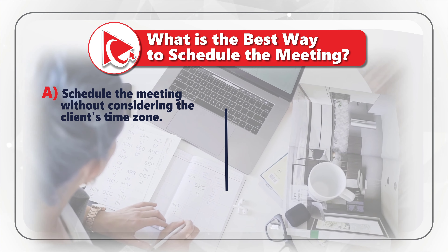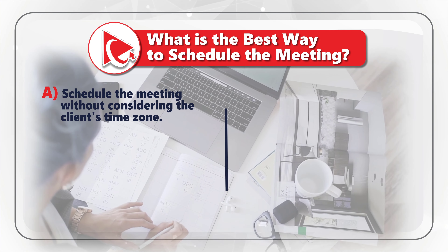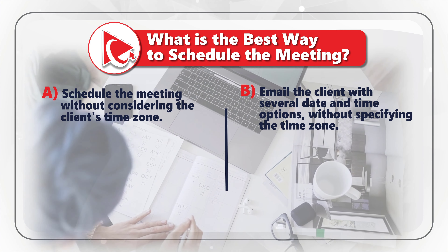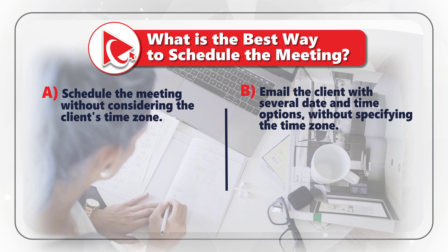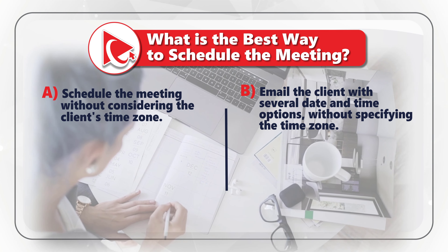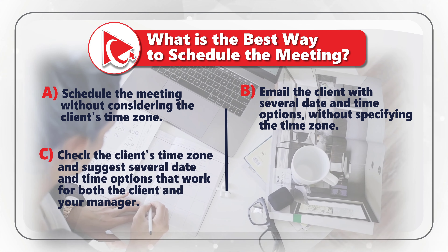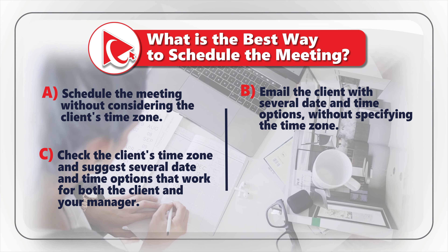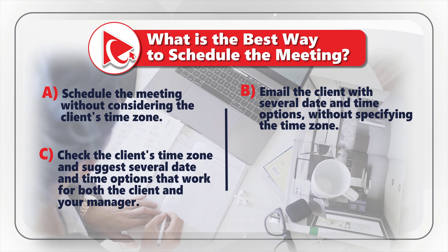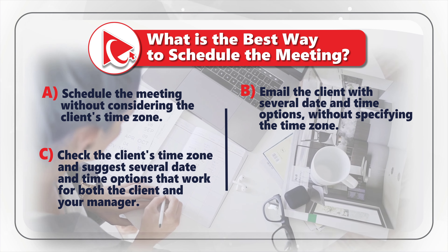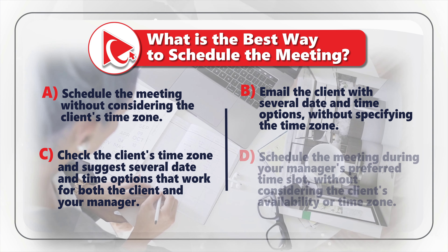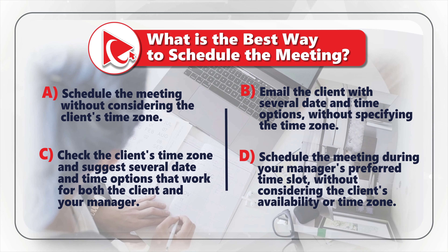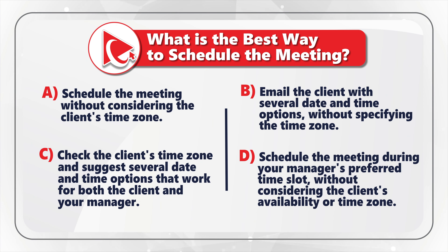Choice A: Schedule the meeting without considering the client's time zone. Choice B: Email the client with several date and time options without specifying the time zone. Choice C: Check the client's time zone and suggest several date and time options that work for both the client and your manager. Choice D: Schedule the meeting during your manager's preferred time slot without considering the client's availability or time zone.